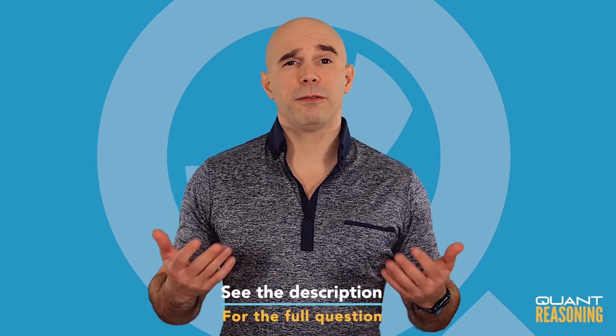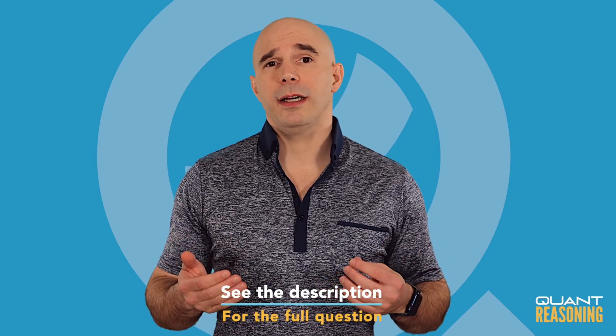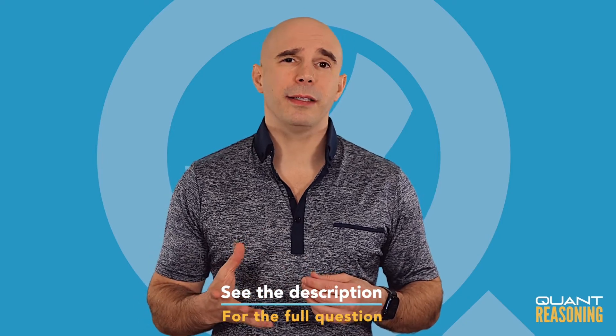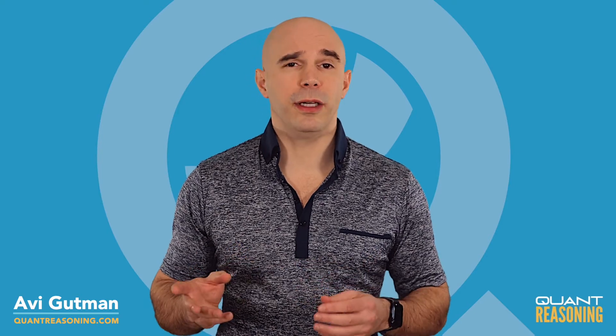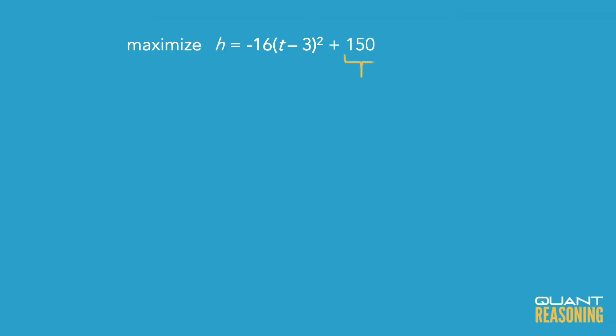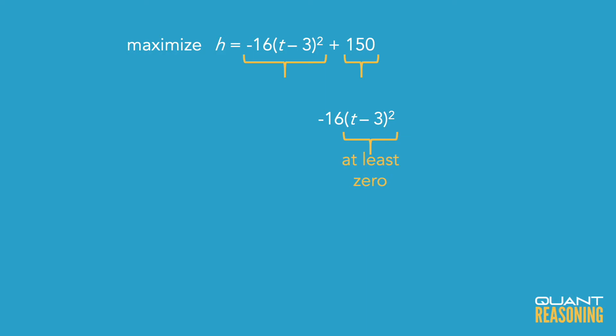This question gives us a formula for height and asks about the maximum height. So how do you maximize the expression negative 16 times t minus 3 squared plus 150? The 150 part is always going to be 150 — we can't really do anything about that. But the negative 16 times something squared: at most that would just be zero, because for it to be positive you'd have to multiply negative 16 times something negative, but something that's squared will never be negative.